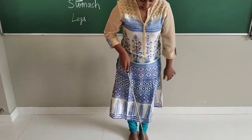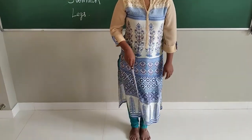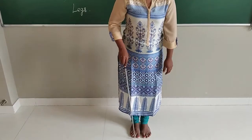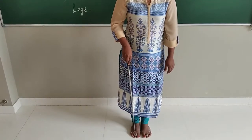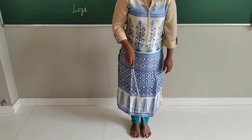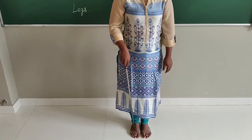And these are our foot. Foot and these are called as toes. The fingers in the legs are called as toes, children. And we have ten toes. Understood?